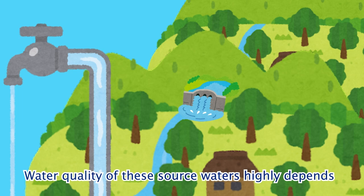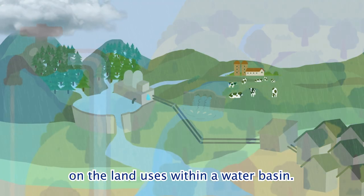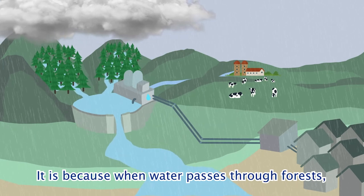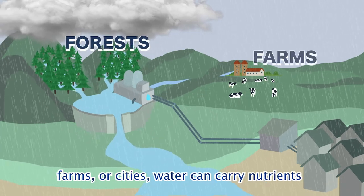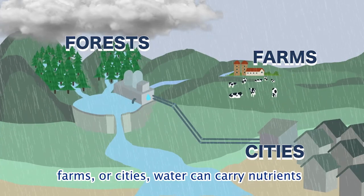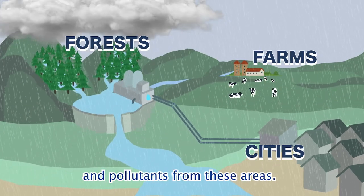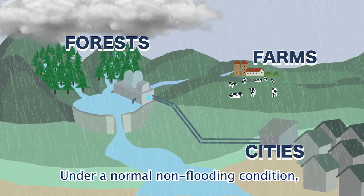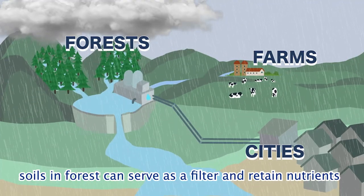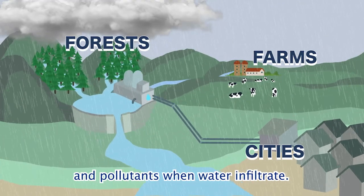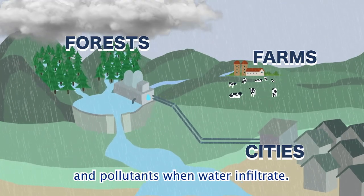Water quality of these source waters highly depends on the land uses within a water basin. When water passes through forests, farms, or cities, it can carry nutrients and pollutants from these areas. Under normal non-flooding conditions, soils and forests can serve as a filter and retain nutrients and pollutants when water infiltrates.